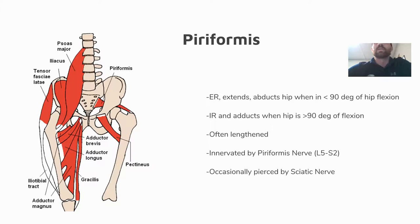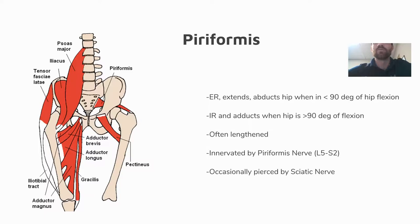The piriformis is one of the more confusing muscles because its action changes based on hip position. With the hip in less than 90 degrees of flexion, it is responsible for external rotation, extension, and abduction. Past 90 degrees of flexion, it is responsible for internal rotation and adduction. People often want to stretch this muscle, but more often than not it tends to be in a lengthened position — remember, putting a muscle on stretch makes it feel tight regardless of whether it truly is. Use landmarks and muscle length tests to determine if a muscle is truly tight.